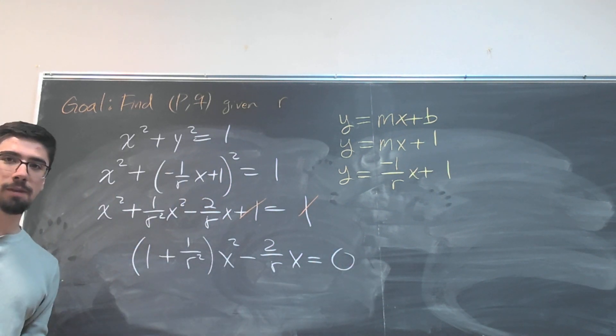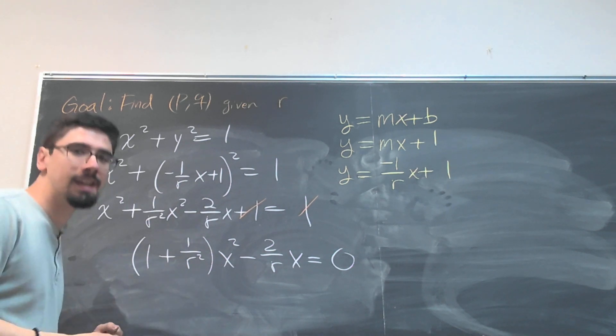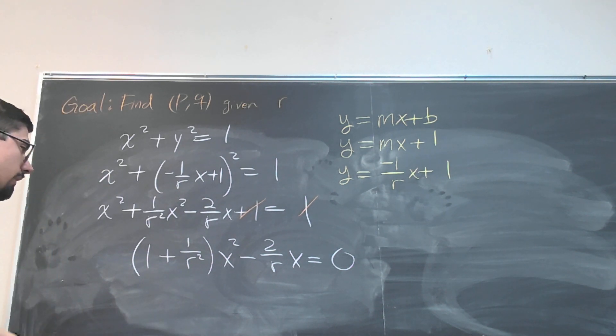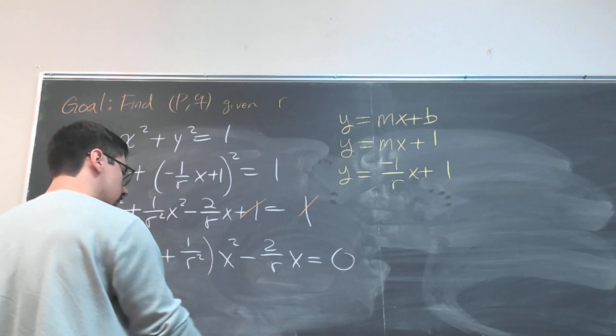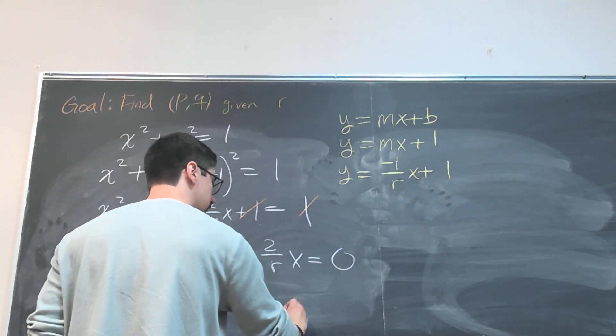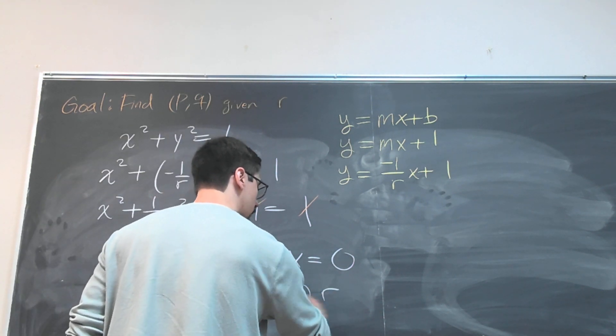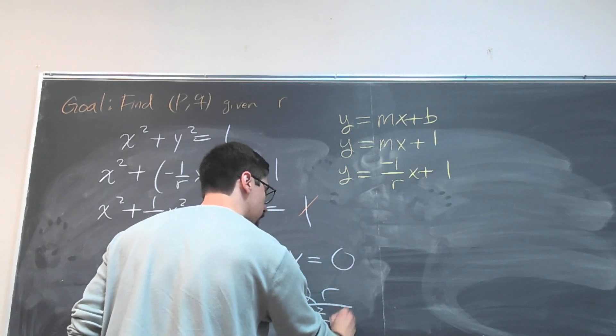And now from here the name of the game is just solving for x. And you can check this for yourself that when we go ahead and finish this calculation we get that x must equal 2r over (r² + 1).